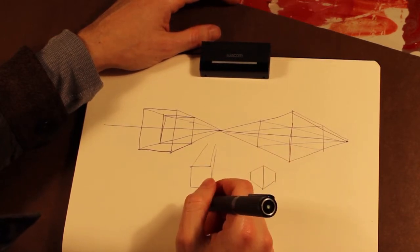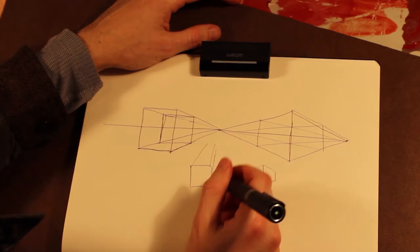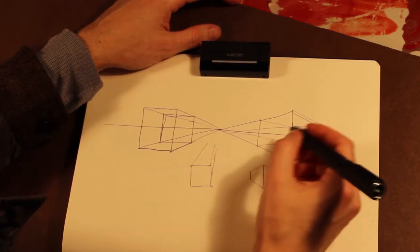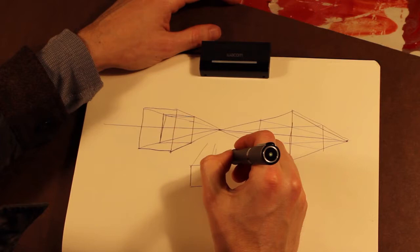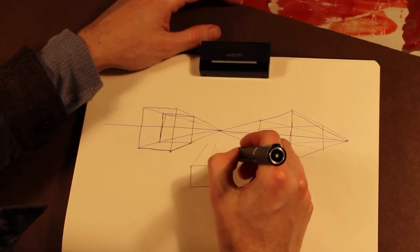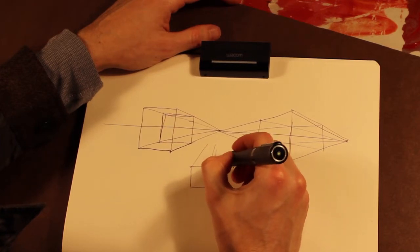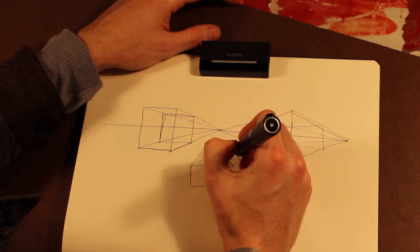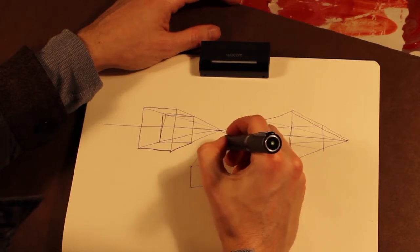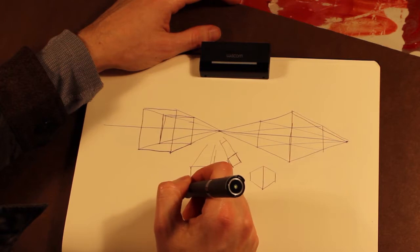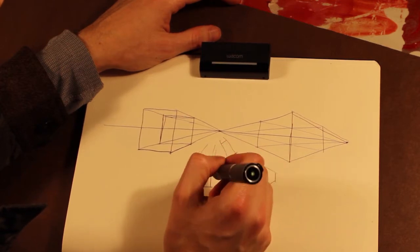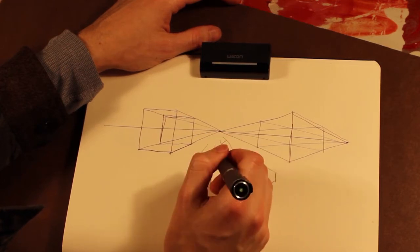That should be making a little bit of sense now. But let's say that you're drawing a solid that is oriented a little differently to the horizon line. And then you're going back to a vanishing point from there, because obviously those are not parallel and perpendicular to the horizon line.